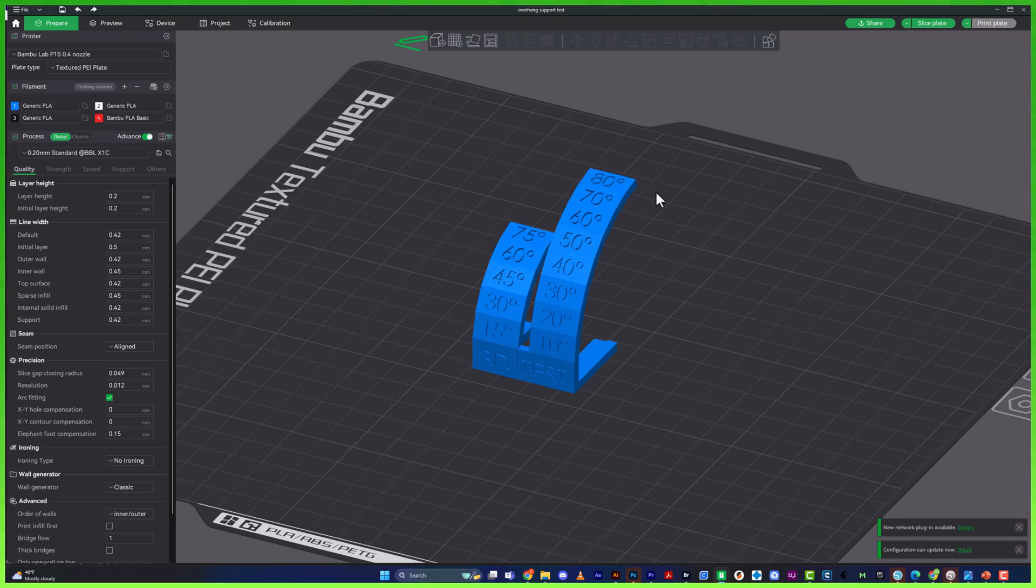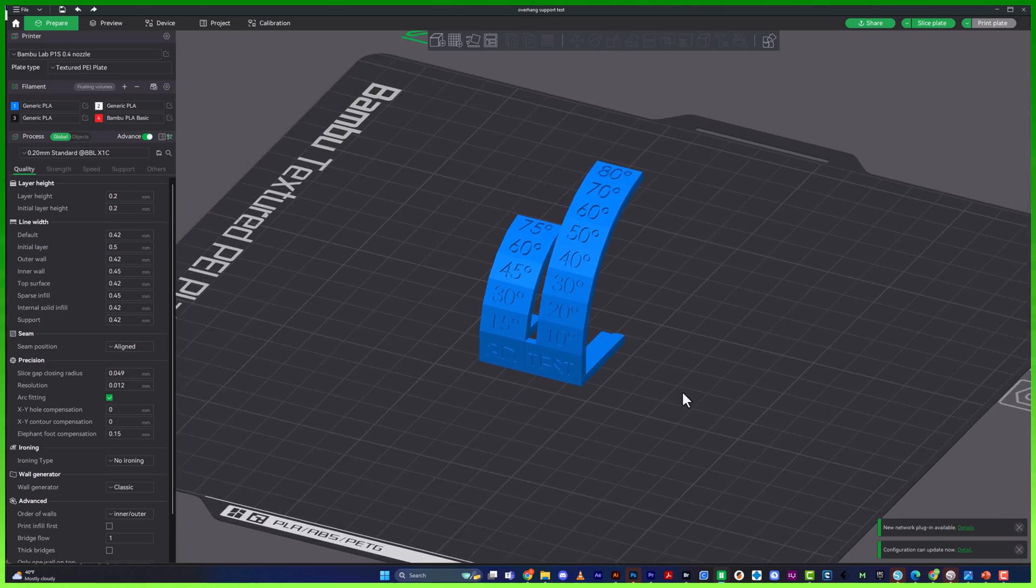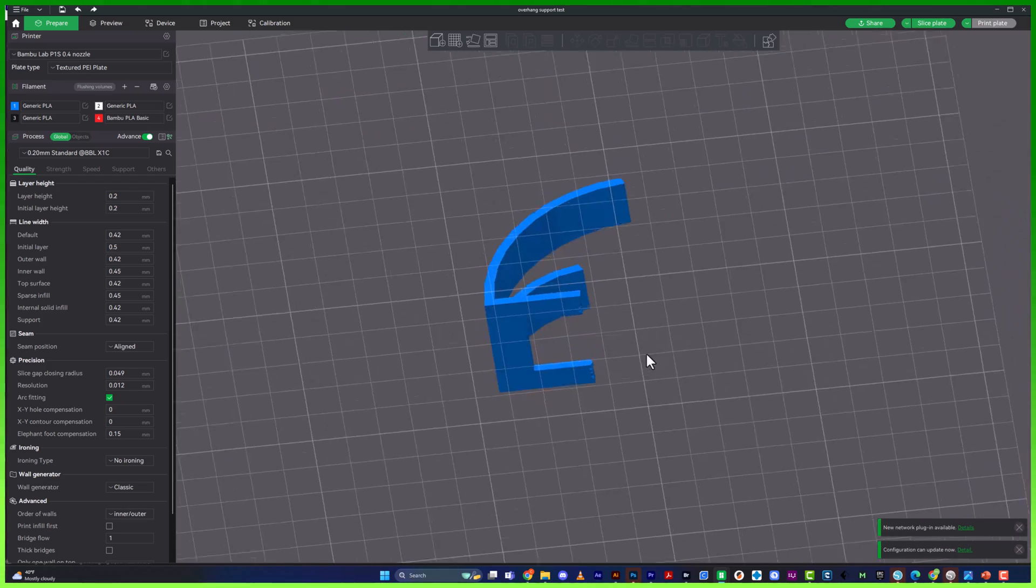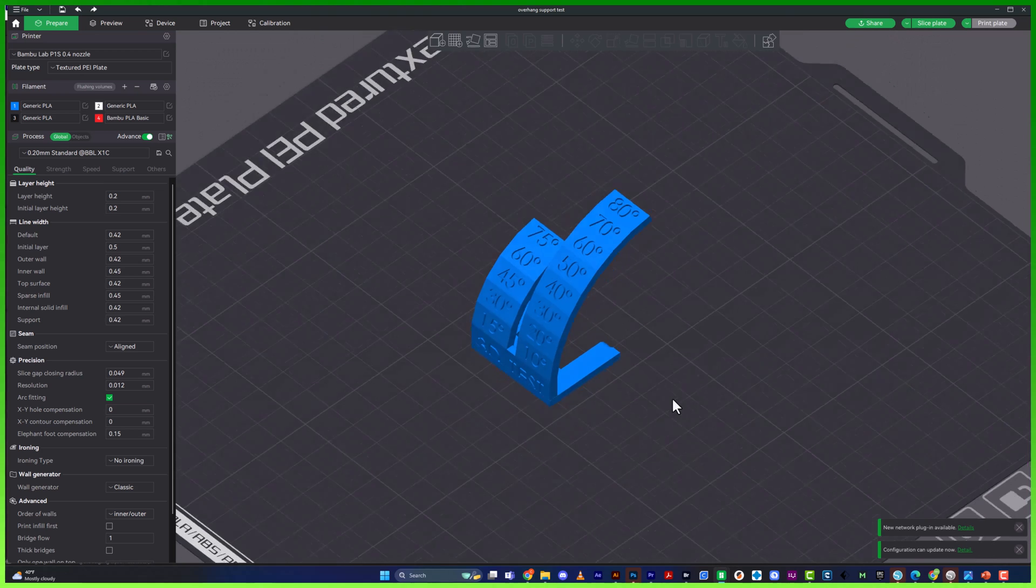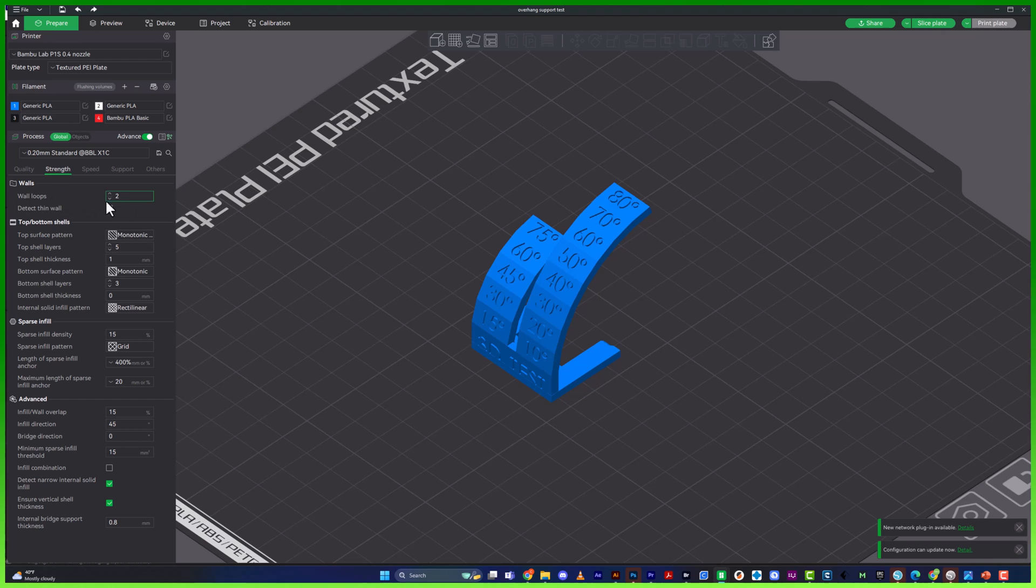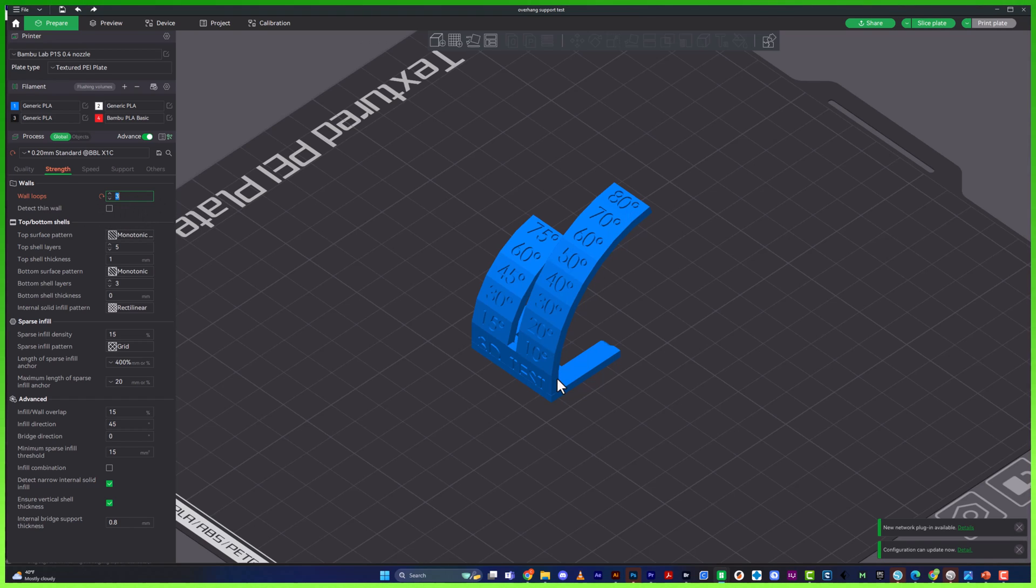So I went ahead and added the model onto my build plate in Bamboo Studio, and it is just sitting nice and flat right here in the middle. Now a few things. I am testing this at a 0.2mm standard. This is what I'm doing. Now I am not changing any of the settings whatsoever when it comes to my layer height or anything on my quality side. Now when it comes to my wall loops, I like to go with three walls when it comes to this overhang.